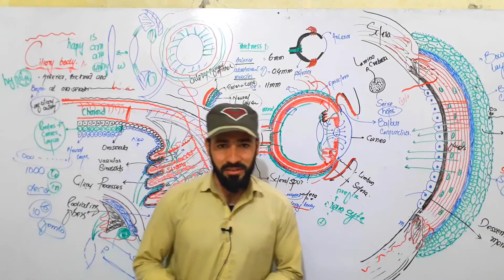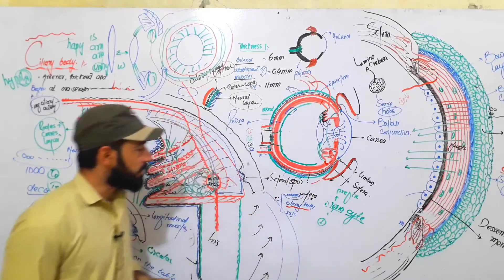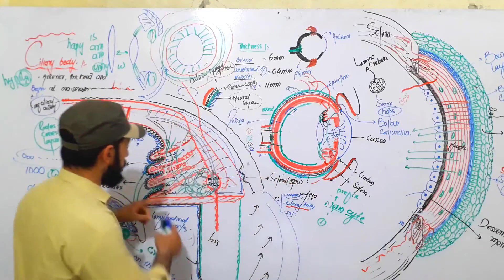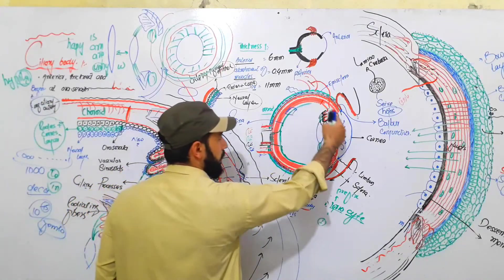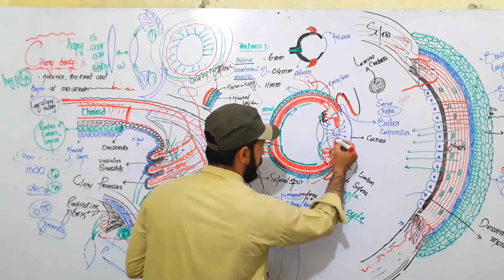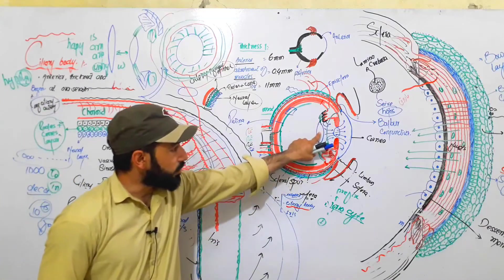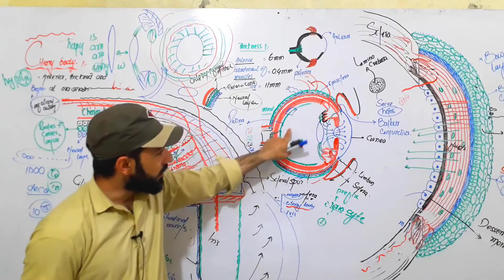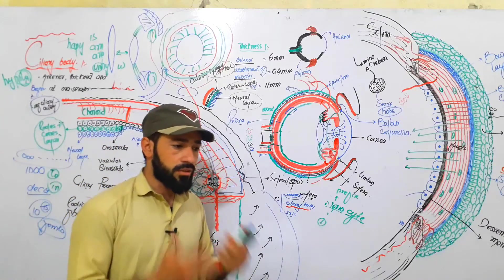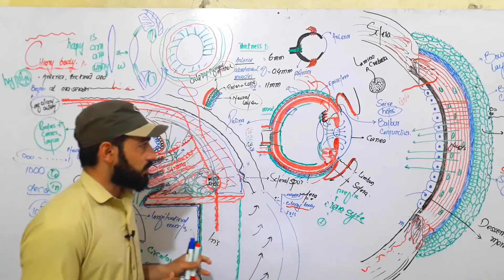Hello, dear friends and students. Assalamu alaikum and welcome back. We are discussing the structure of the human eye. Our previous lectures covered the structure of the cornea and the uveal tract, including the choroid layer and the ciliary body in detail. Now I'm going to discuss the structure of the iris, then the lens, other eye structures, blood supply, venous drainage, and innervation — each in separate lectures.